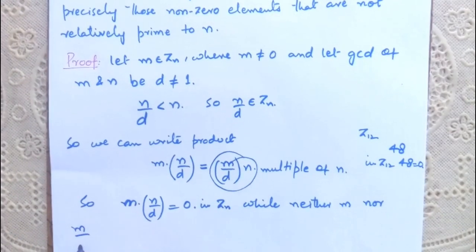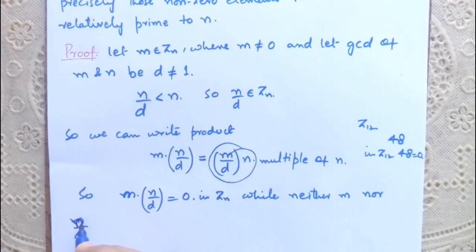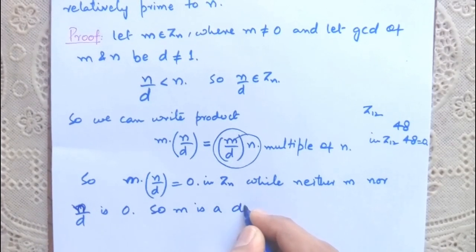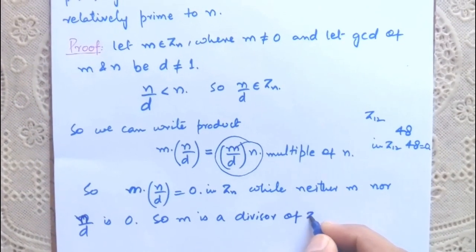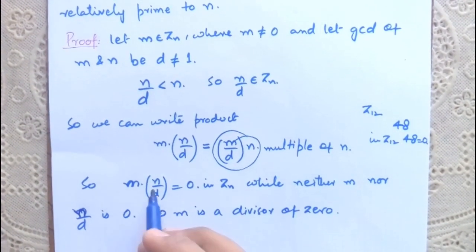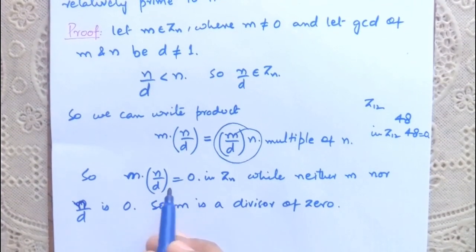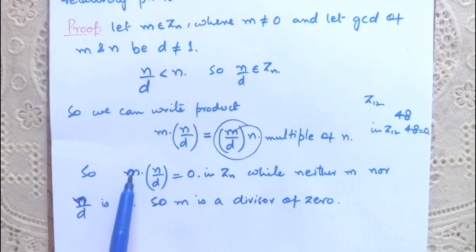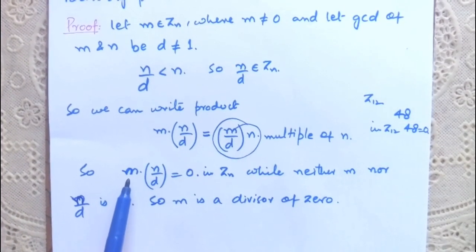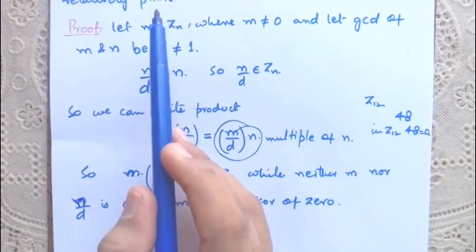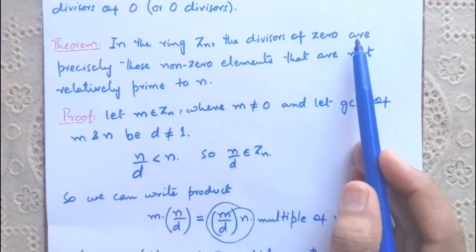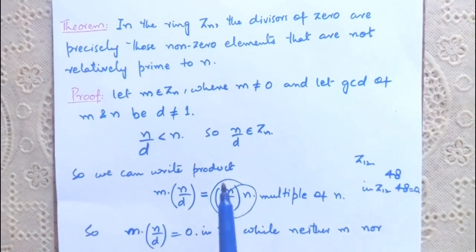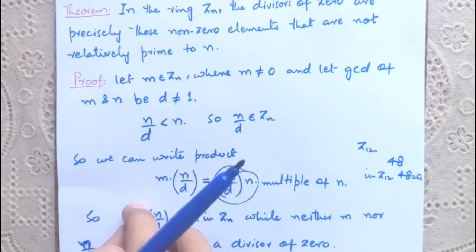It means that m is a divisor of zero. Both m and n/d are non-zero numbers, and their product is 0. We had started by assuming m is not relatively prime to n, and we have now proved that m is a divisor of zero. So in a ring Zₙ, divisors of zero are precisely those non-zero elements that are not relatively prime to n — the theorem is proved in this direction.